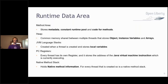The runtime data area handles runtime data. The method area stores metadata, the constant runtime pool, and code for your methods. The heap uses common memory shared between multiple threads and stores objects, instance variables, and arrays. JVM language stacks are created when a thread is created and store local variables. PC registers are created for every thread and store the address of the JVM instructions currently being executed. The native method stack holds native method information.